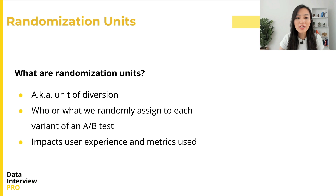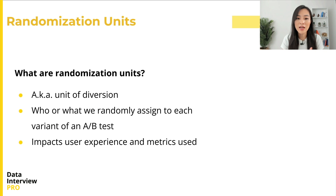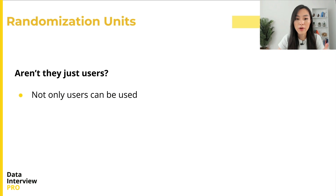First of all, what is a randomization unit? The term may sound intimidating, but a randomization unit — also known as the unit of diversion — is who or what we randomly assign to each variant or group of an A/B test. Selecting the right randomization unit is critical because it impacts both user experience and what metrics we can use. You might think randomization units are simply users, but it's actually a bit more complicated than that.